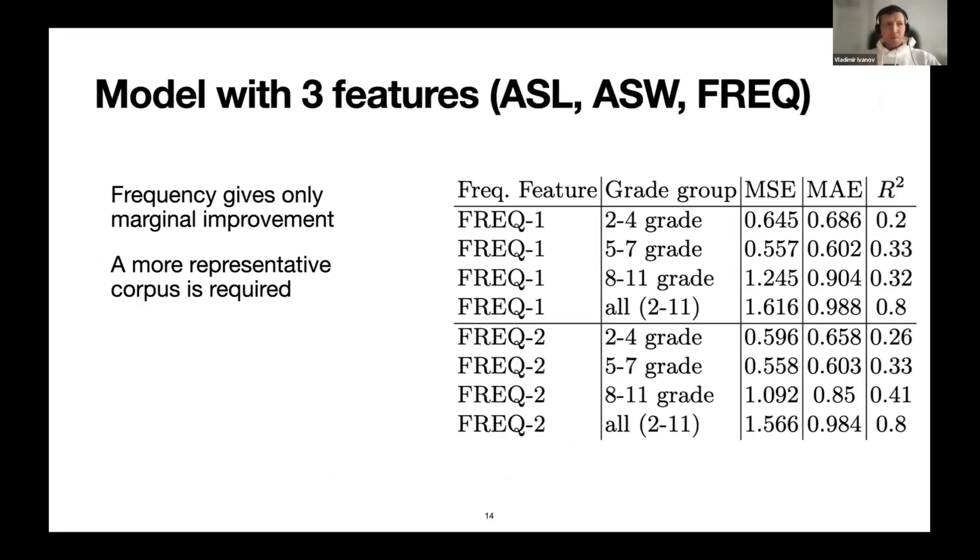The next step was to build a model with several levels of textbooks. We have range between second and fourth grade, fifth and seventh, and eighth and 11th as was before. Here in the table you can see the MSE and MAE errors again. The point is that there is not that much difference between the frequency contribution. What is more interesting here is that comparing to the model with two parameters, this additional feature doesn't improve performance in terms of the error.